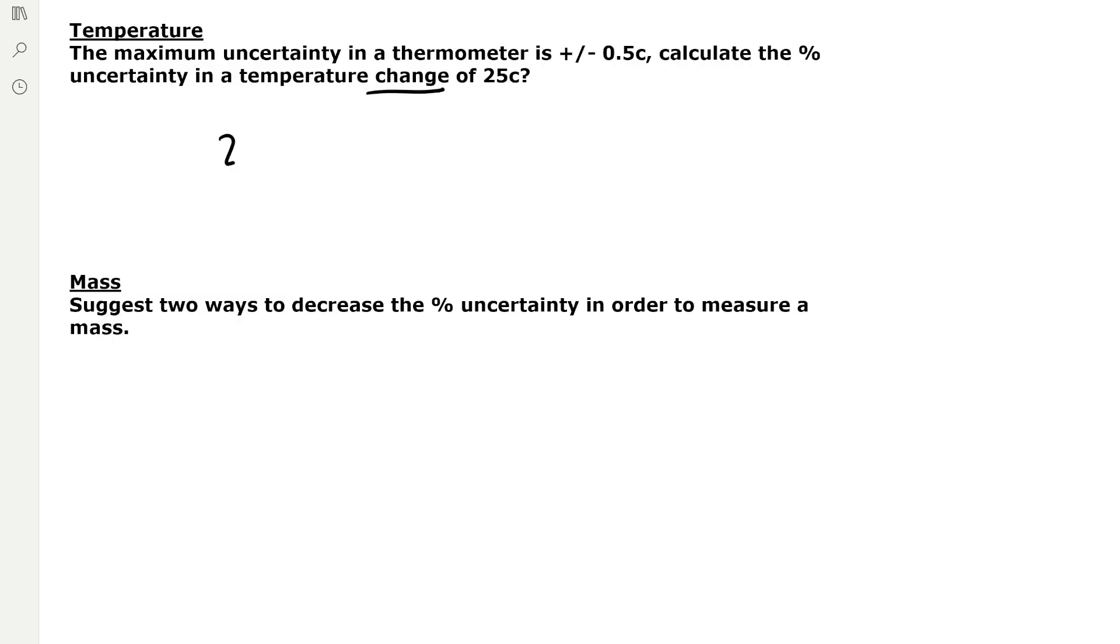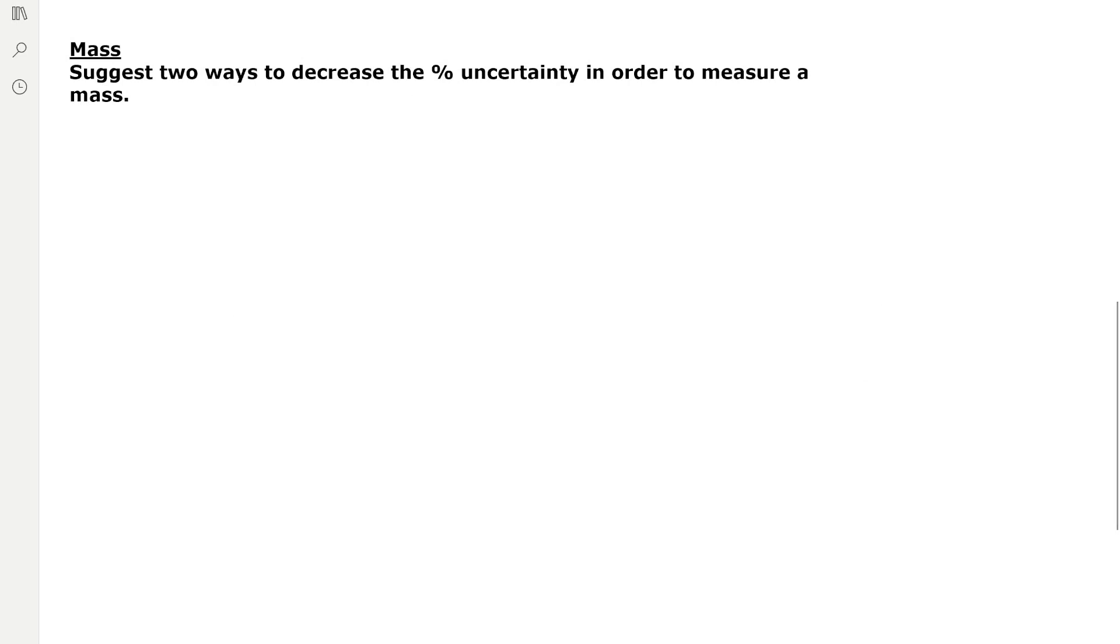So we need to multiply by 2. Then our uncertainty is 0.5 degrees Celsius divided by the total measurement of 25 degrees Celsius multiplied by 100, which gives us 4%. Then for mass,